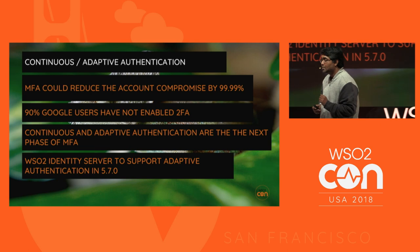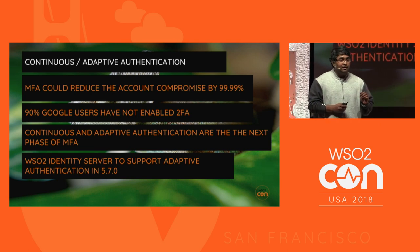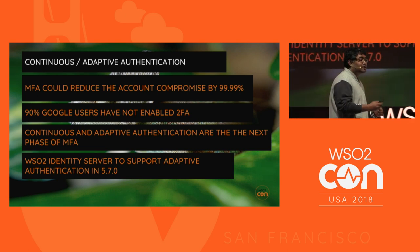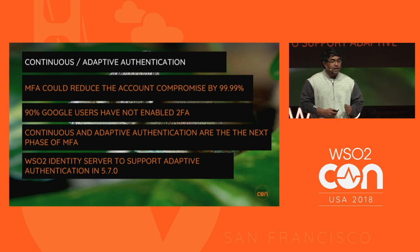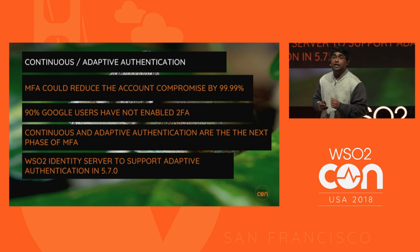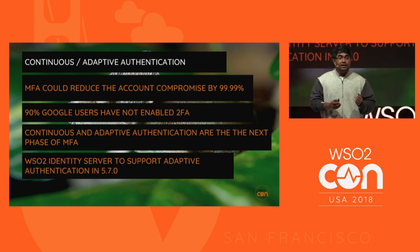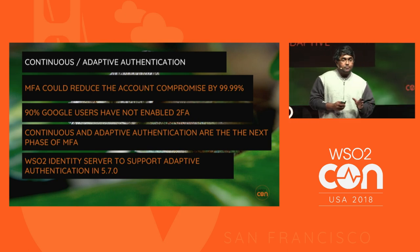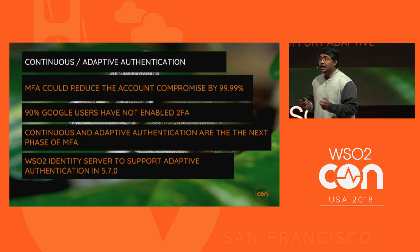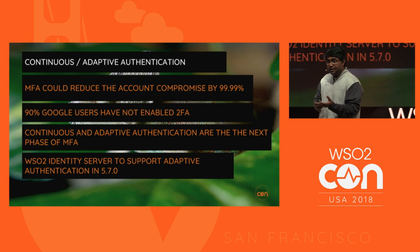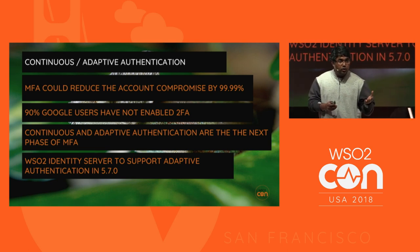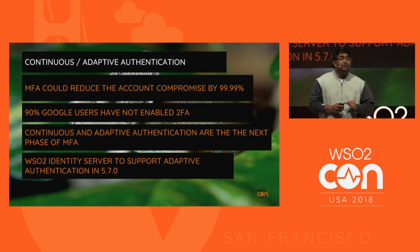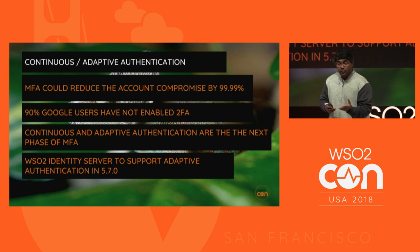There's a very simple theory in life: if we cannot get rid of something, then we find something to work with it. That's where multi-factor authentication comes in. MFA could reduce account compromise by 99.99%. But sadly, 90% of Google users have not enabled two-factor authentication. Google has many options — OTP based on SMS, TOTP-based Google Authenticator, or even FIDO. FIDO is becoming the de facto standard for multi-factor authentication.